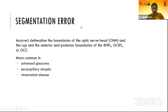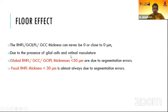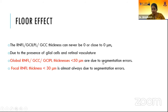Segmentation error is caused by incorrect delineation of the boundaries of the optic nerve head and the anterior and posterior borders of RNFL, GCIPL, and GCC. It is more common in advanced glaucoma, peripapillary atrophy, and vitreoretinal disease. The RNFL thickness can never be zero or close to zero due to the presence of glial cells and retinal vasculature even in advanced glaucoma. Hence, a global RNFL or GCIPL thickness less than 50 microns is always due to segmentation error, and a focal RNFL defect of less than 30 microns is always due to segmentation error.